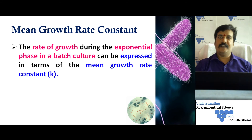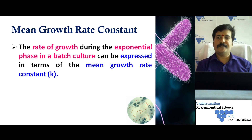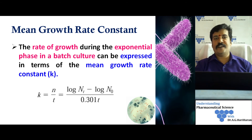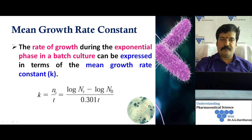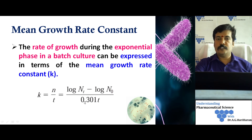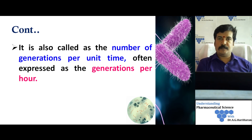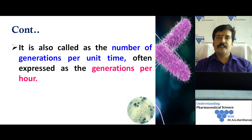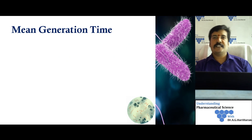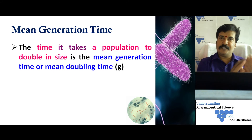The mean growth rate constant k is defined as the number of generations per unit time during the exponential phase. So k = n / t, and substituting our expression for n: k = (log Nt − log N0) / (0.301 × t). This is generally expressed in number of generations per hour.